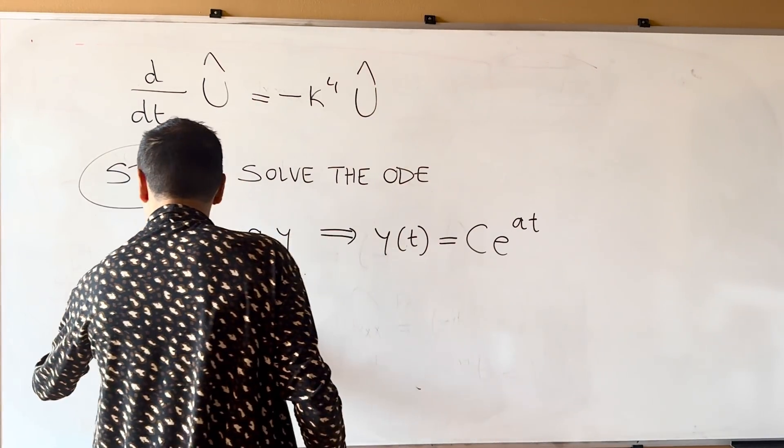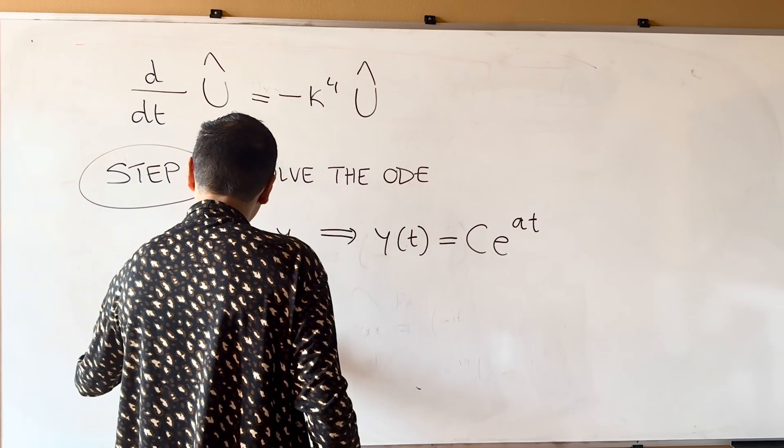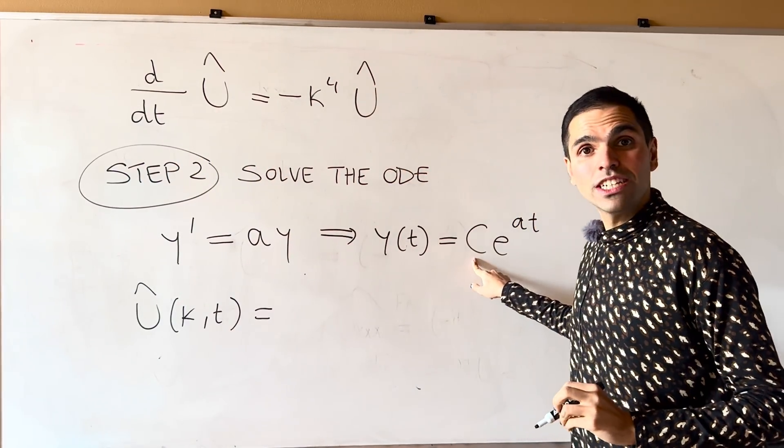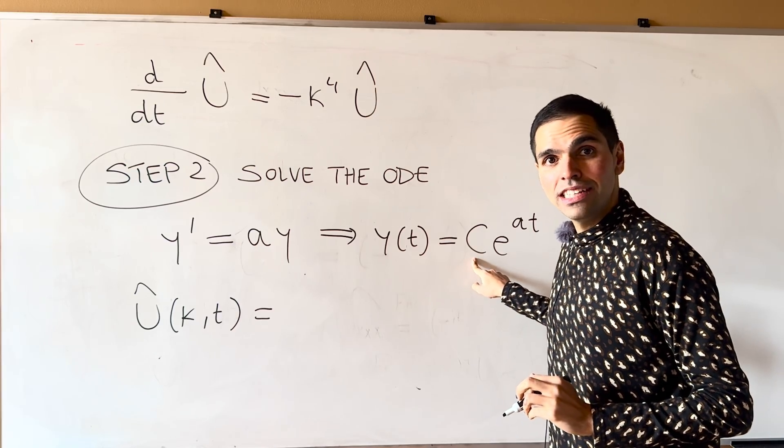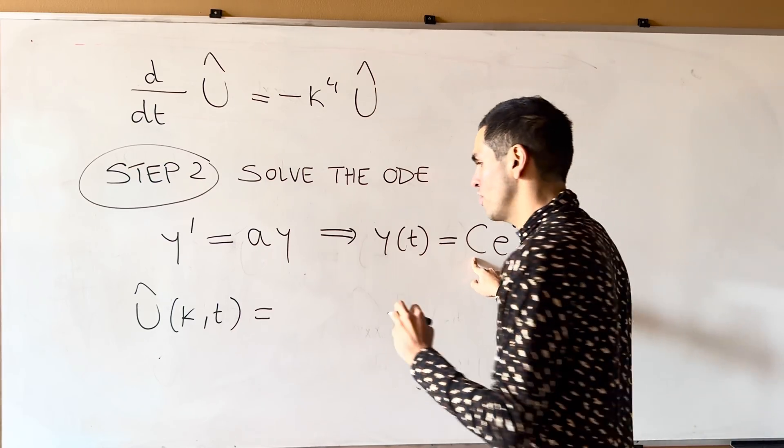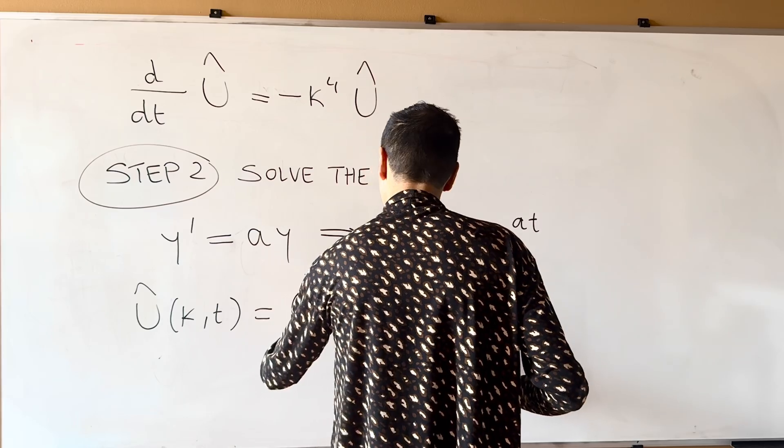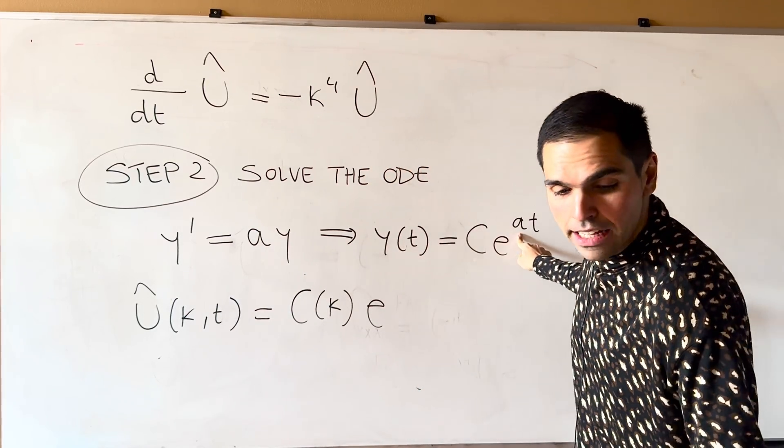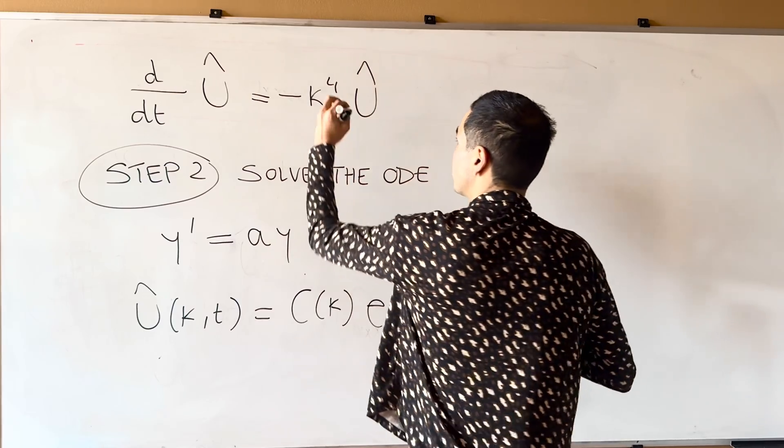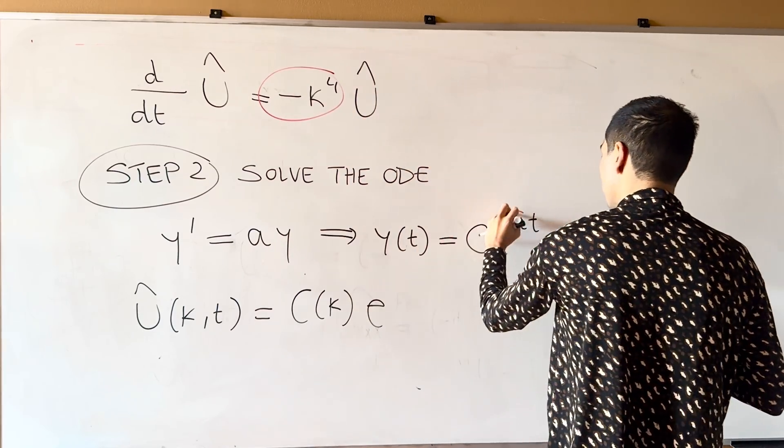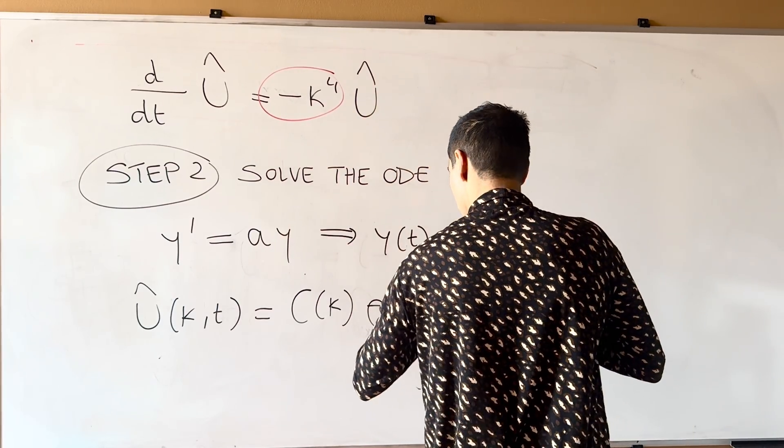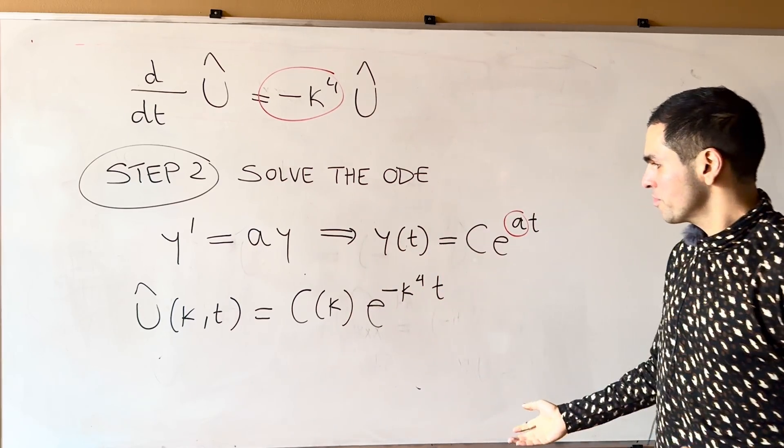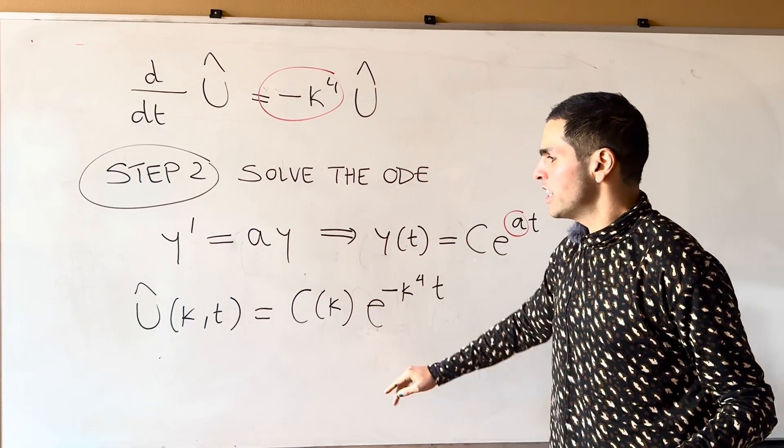And so in this case, what we get, U hat kappa T is C, which is a constant with respect to T, and therefore a function of kappa, so C kappa, E to the A, what is A? It's just minus kappa to the fourth, minus kappa to the fourth, and then T. So that's already very good. We have a slightly more explicit formula for U hat.